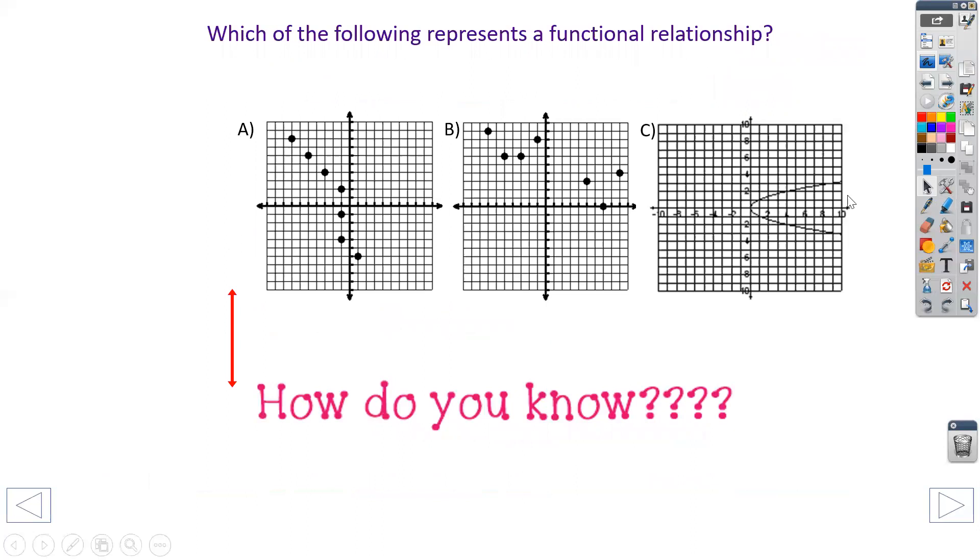Which of these following represents functional relationships? So if I look at these, well, if I look at A, so far it looks good up until right here. Notice my vertical line passes through three dots. Therefore, not a function. B, all my dots seem to look okay. So that one is a function. C, if I were to draw a vertical line right here, you can see that it crosses my line here and it crosses it there. So therefore, not a function.